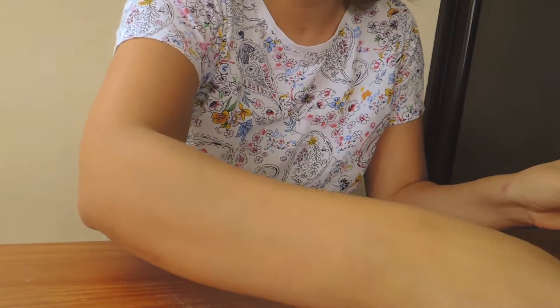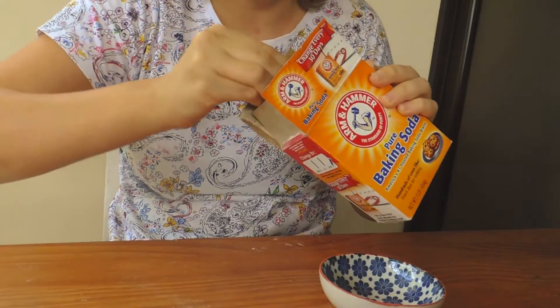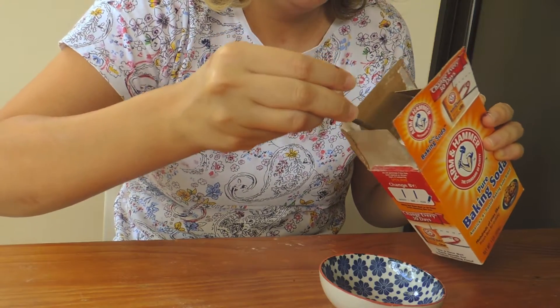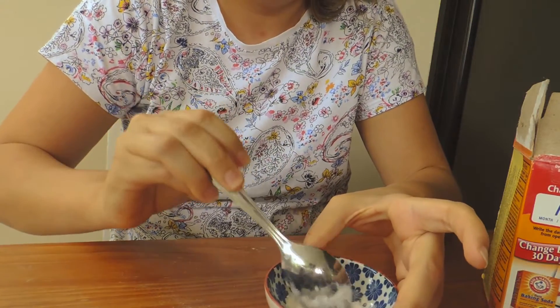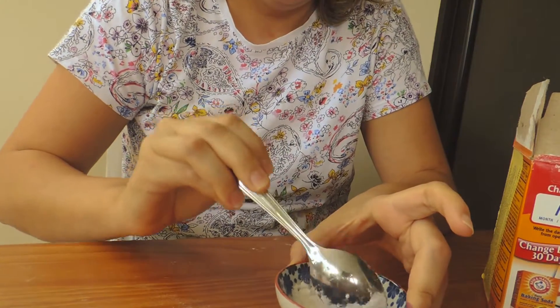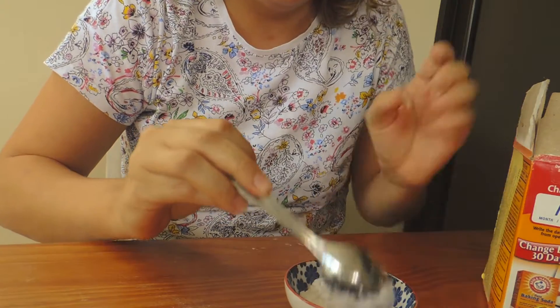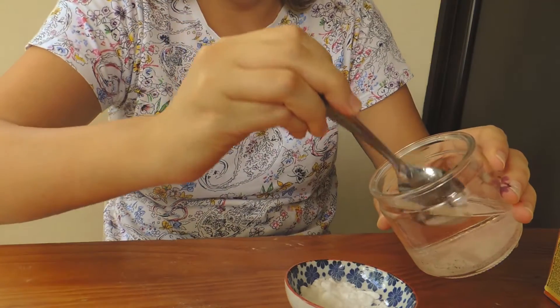In order to make the paint, we're going to need the baking soda. We're going to put about a spoon of baking soda, and we're going to take out all the little lumps.